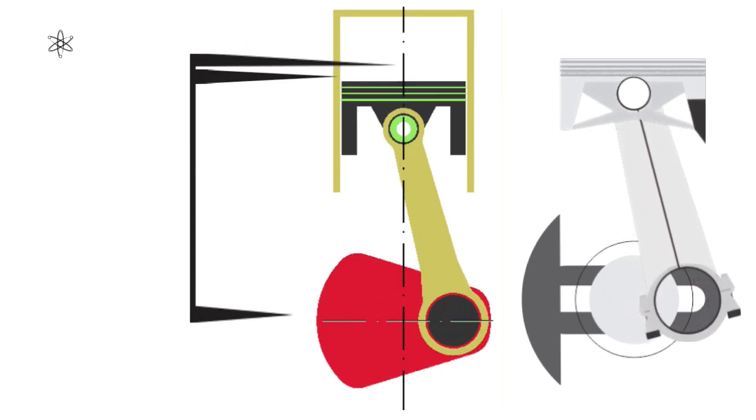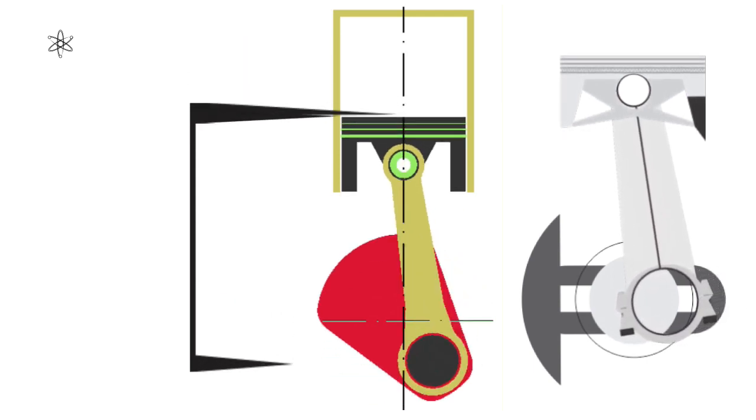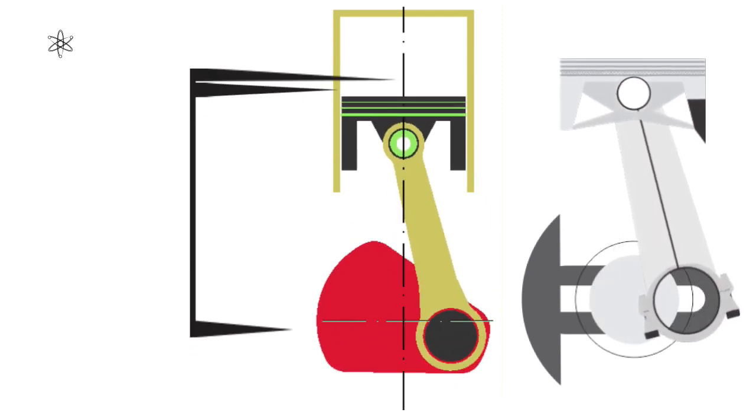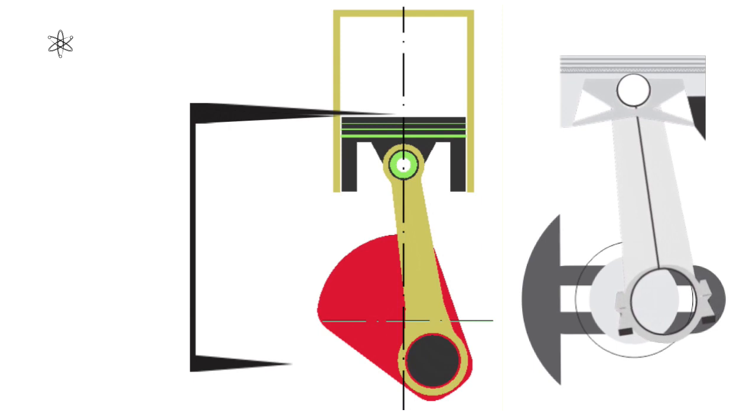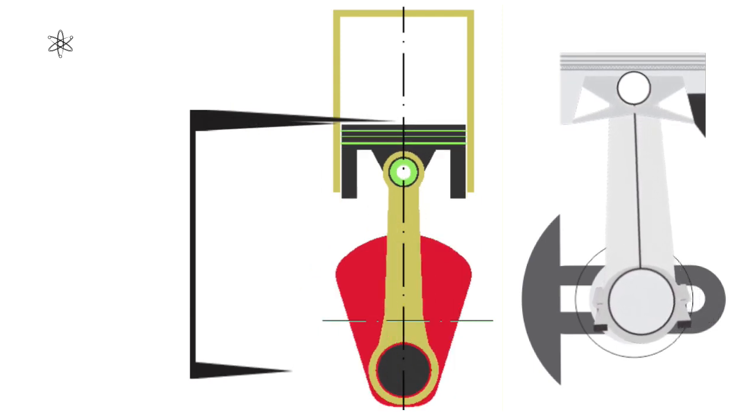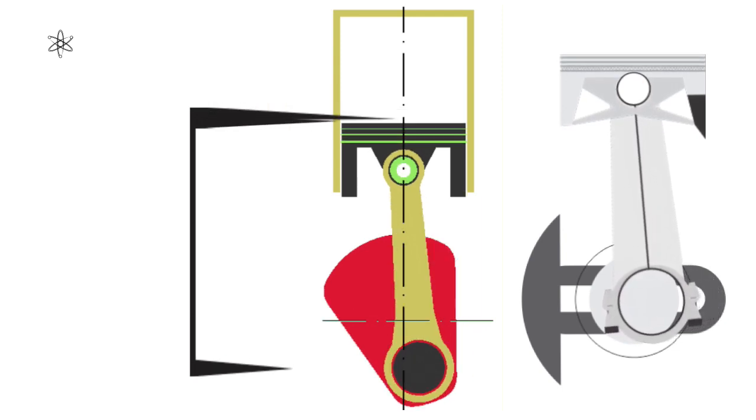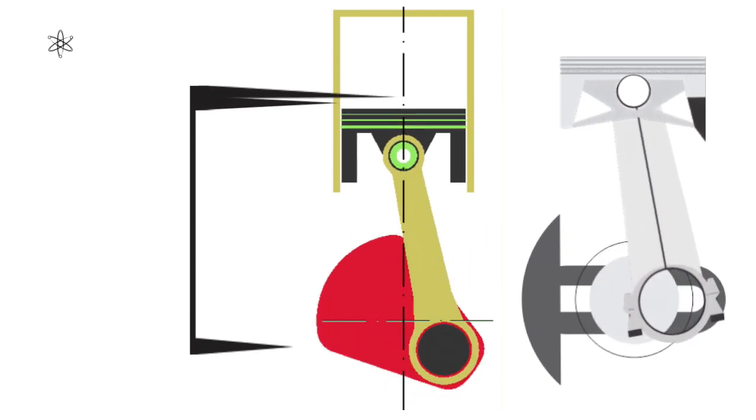Here the piston starts to slow down as the crankshaft begins to move the connecting rod towards the piston center line. This has the effect of moving the piston upwards but at a much lesser rate than the crank pin moving downwards. Combine this again and the piston is moving slower towards the top dead center.